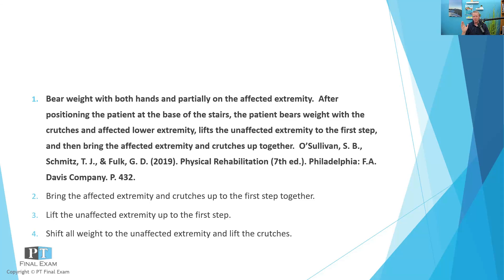Of note — and this is critical — anytime there is a railing present, you should use the rail. This was not described in this question, but whenever a rail is present you will use it regardless of which side it is on. You hold on to the firm rail with one hand and move both crutches to the other hand, so you can use both the rail and the crutches. The rail is the most sturdy and stable thing a patient can hold on to. This is a good example of equipment, devices, and technology.